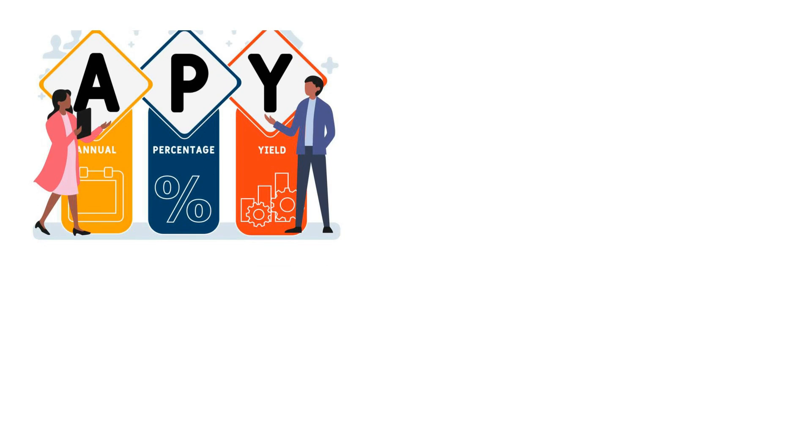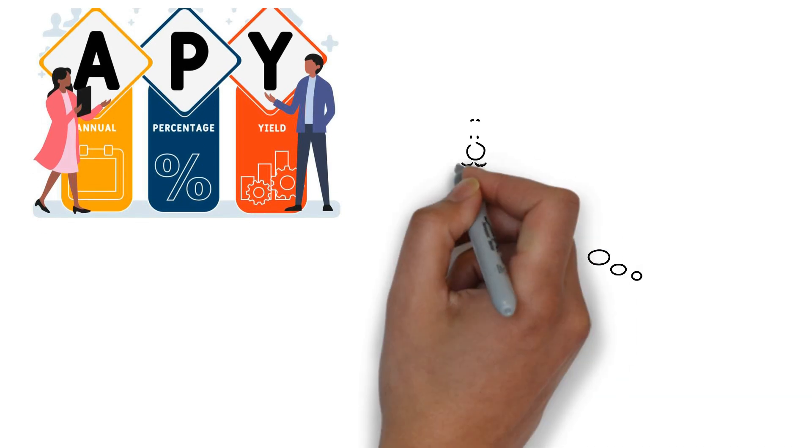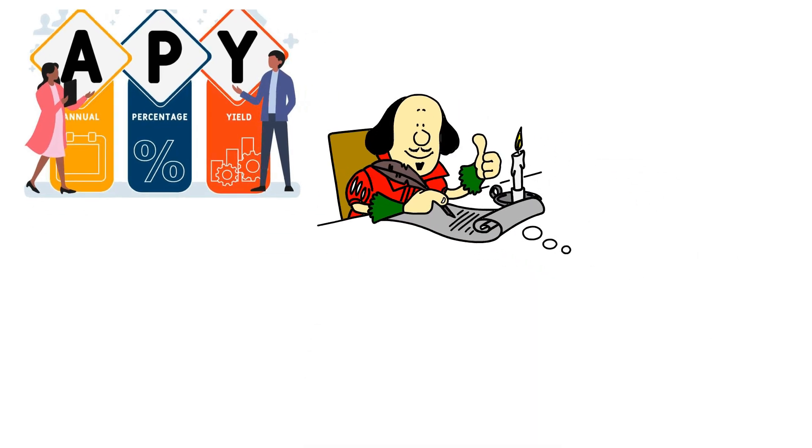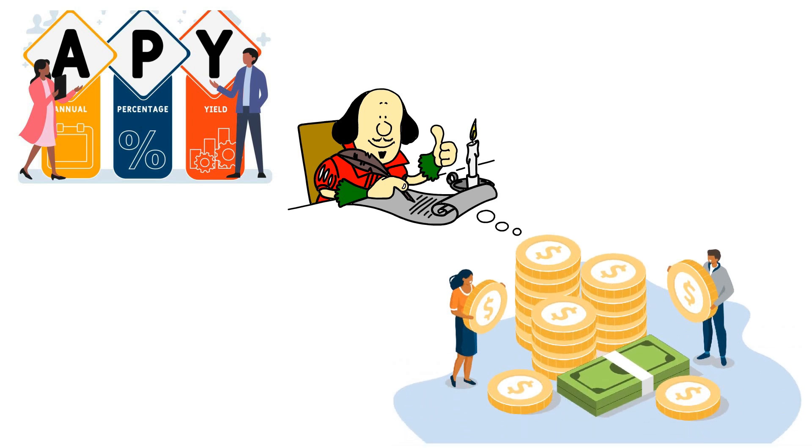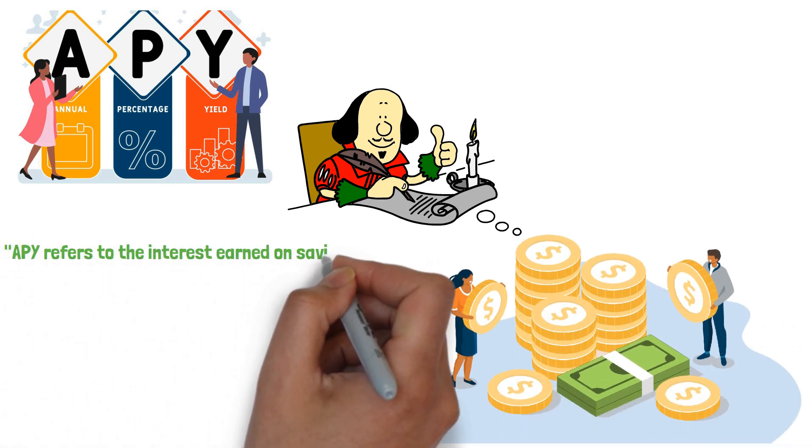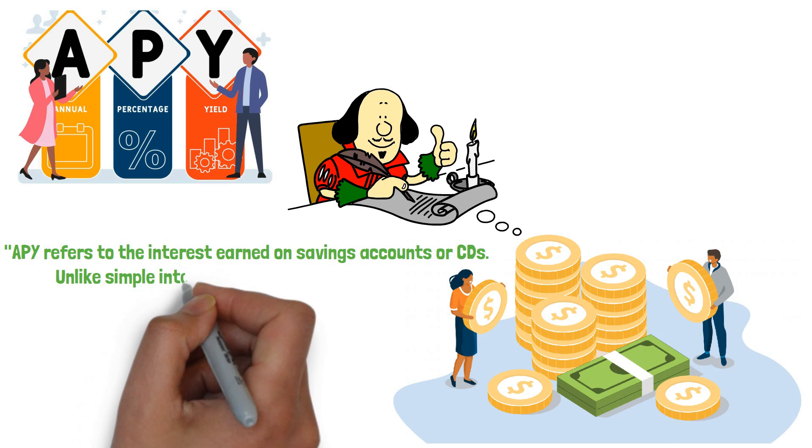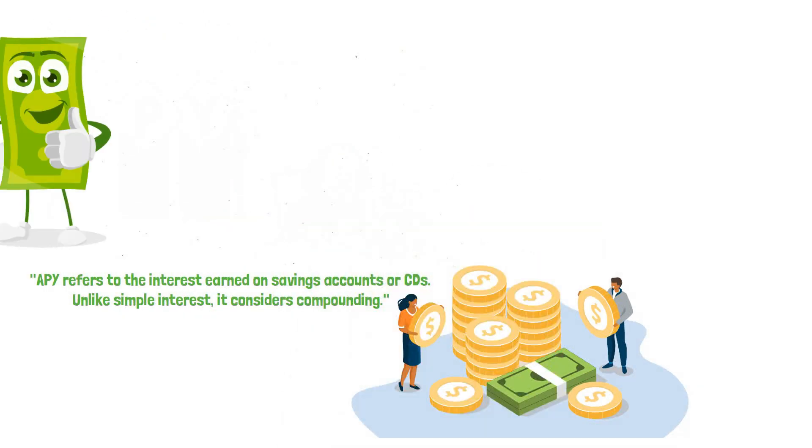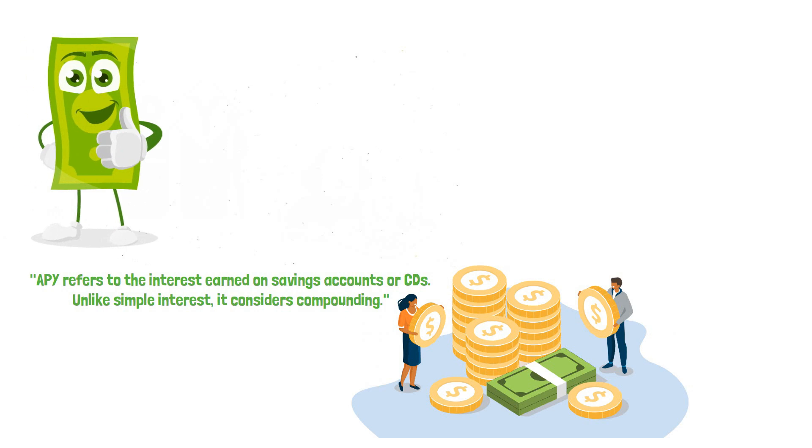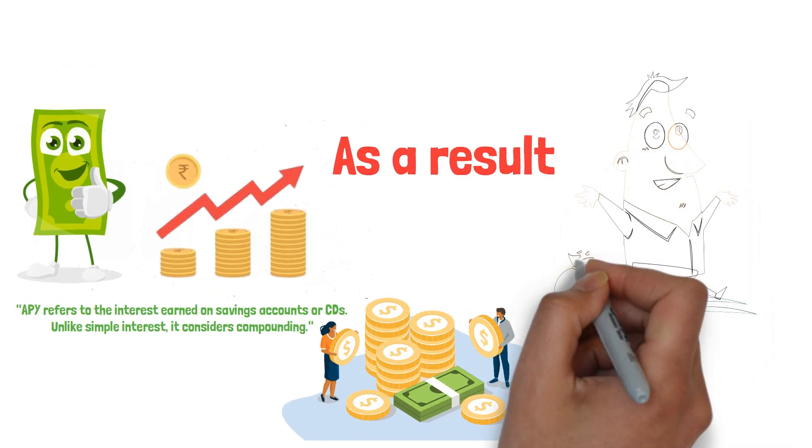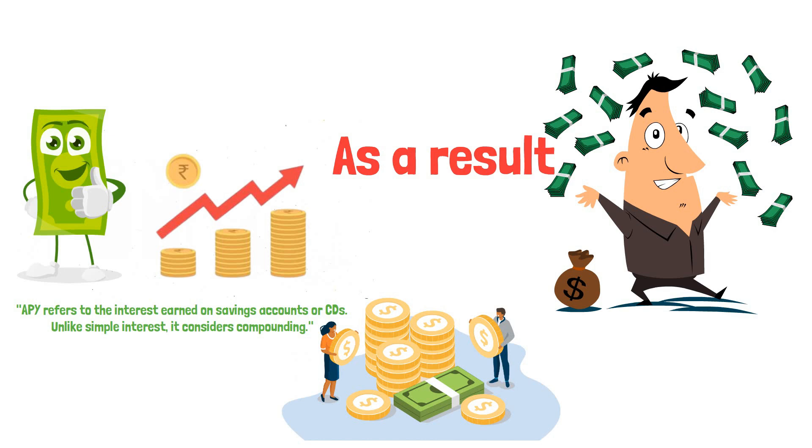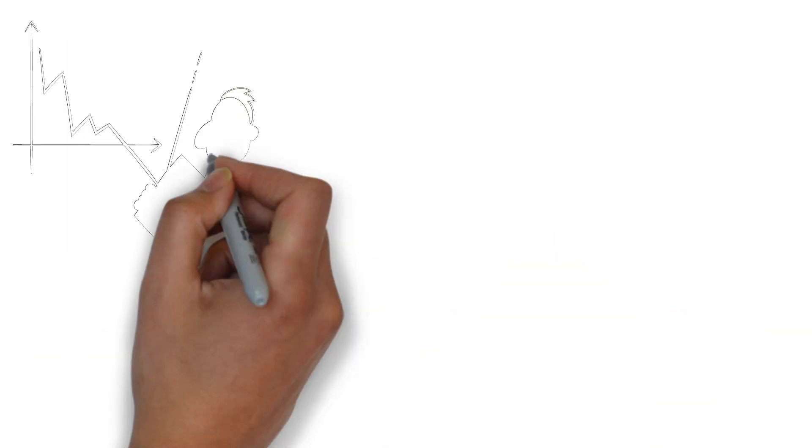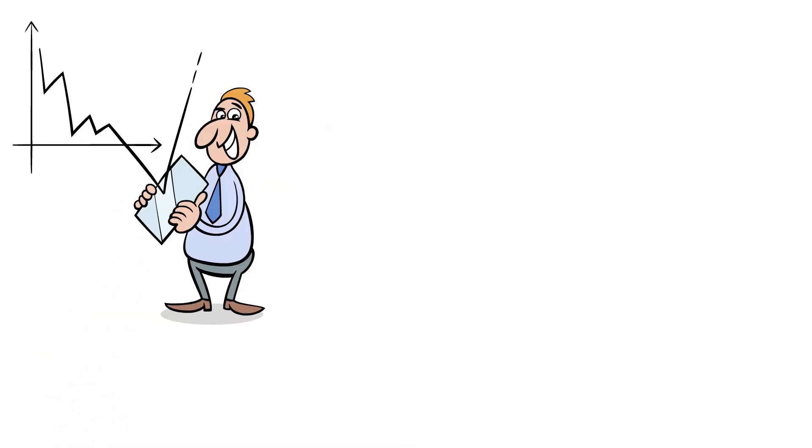Annual Percentage Yield, or APY, is another important concept in understanding interest rates, particularly for savings accounts or CDs. APY refers to the interest earned on savings accounts or CDs. Unlike simple interest, it considers compounding. This means that the interest you earn not only applies to the initial amount deposited, but also to the interest that has been added over time. As a result, account holders can earn more over time due to the effects of compounded interest.